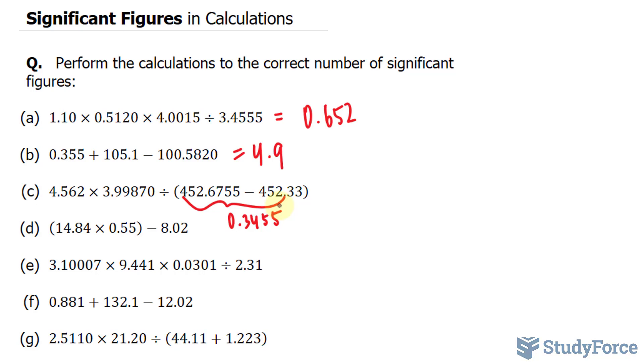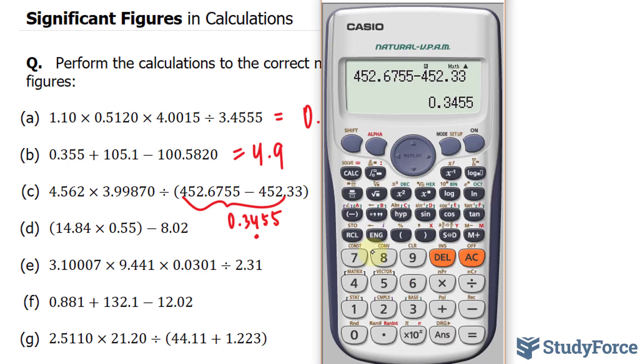So when I perform my next calculation, I'll remember that this number has two significant figures. Now I'll go on to multiply these: 4.562 times 3.99870. That gives me 18.24 divided by what we just found, 0.3455.